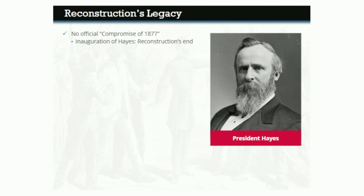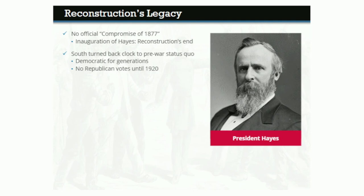In many ways, the South had turned back the clock after Reconstruction, returning to a status quo not unlike what had existed before the Civil War. The South would be solidly Democratic for generations to come — no former Confederate state would cast a single electoral vote for a Republican president until 1920. A handful of black congressmen continued to represent Southern districts in the 1880s and 1890s, but after that, no former Confederate state would send a black man or woman to Washington until 1973, and no black senator would represent a Southern state again until 2013.